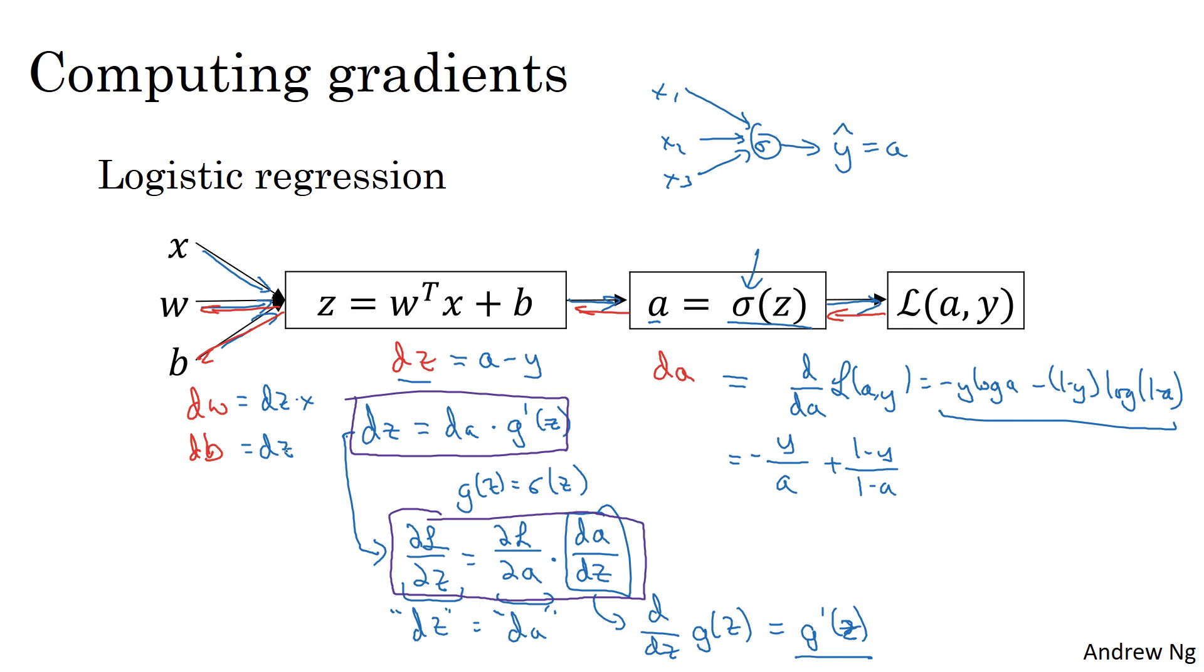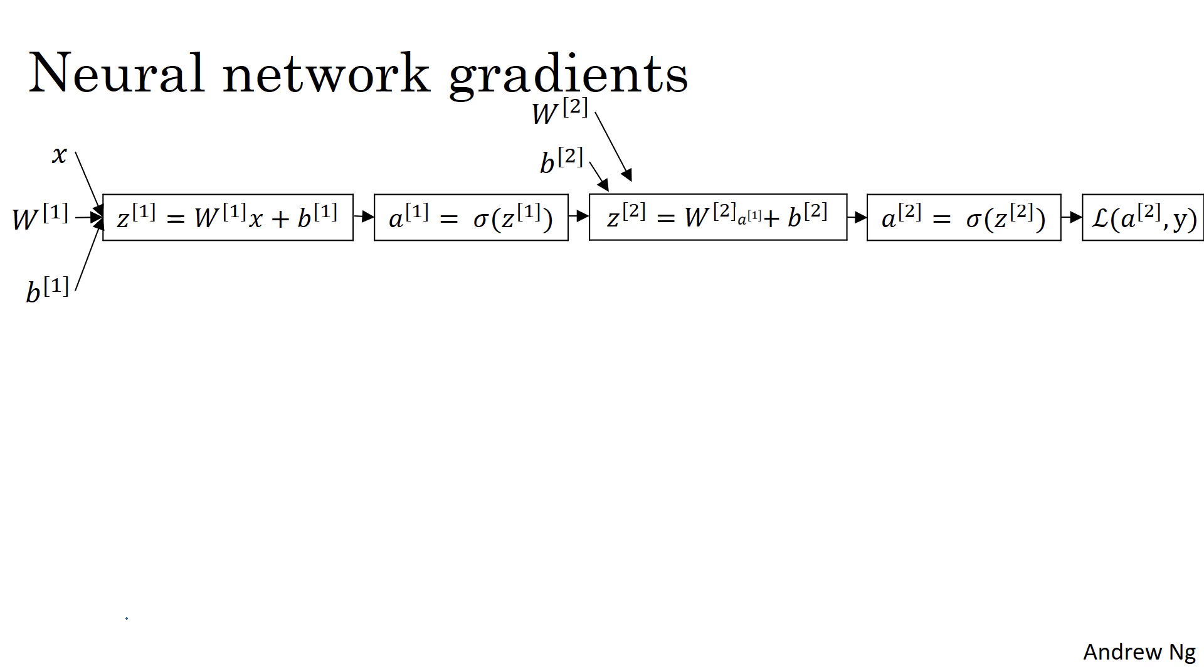What we're going to do when computing backpropagation for a neural network is a calculation a lot like this, but only we'll do it twice because now we have not x going to an output unit, but x going to a hidden layer and then going to an output unit. Instead of this computation being sort of one step, we'll have two steps here in this kind of neural network with two layers. So in this two-layer neural network, that is an input layer, a hidden layer, and an output layer, remember the steps of a computation.